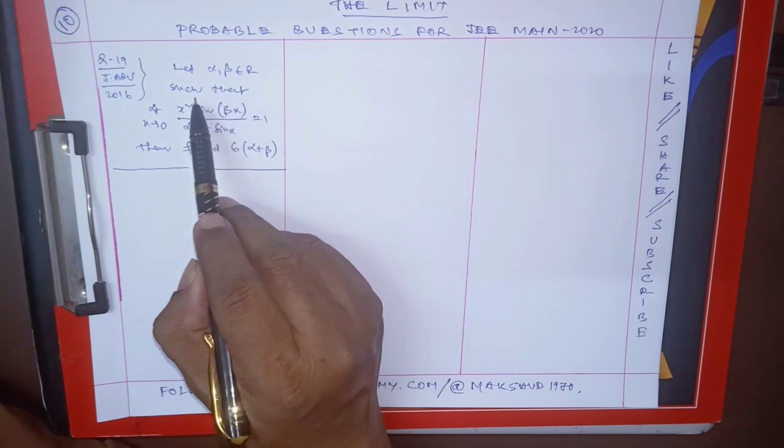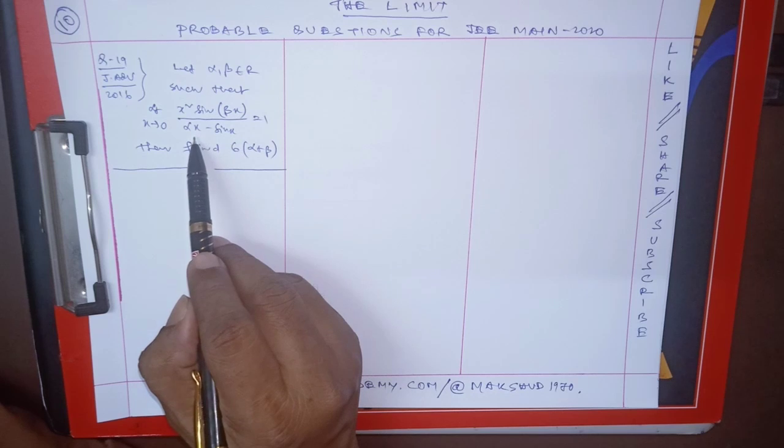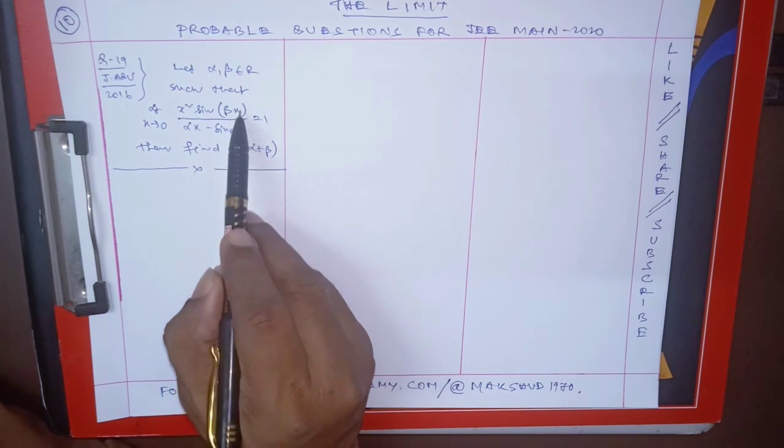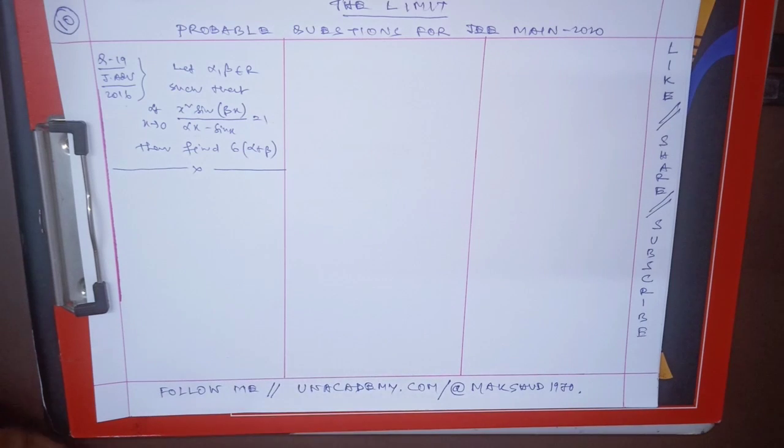Let alpha, beta belong to R such that limit x tends to 0: x squared sine beta x by alpha x minus sine x. The limiting value is 1. Then you will find out 6 times of alpha plus beta.